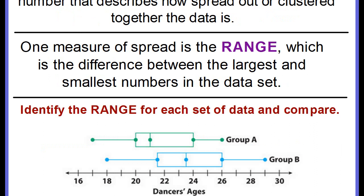Remember, a measure of spread is a single number that describes how spread out or clustered together the data is. One measure of spread that we have already learned about is the range, and the range is the difference between the largest and smallest numbers in a data set. We're going to identify the range for each set of data and compare.